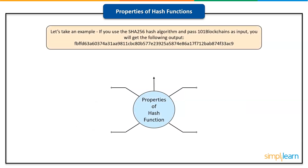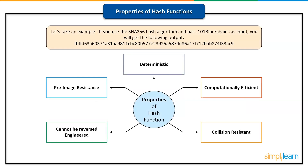Let's take an example. If you use the SHA-256 hash algorithm and pass '101 Blockchains' as input, you will get the following output. This concludes that hash functions have the following key properties: deterministic, pre-image resistant, computationally efficient, cannot be reverse engineered, and collision resistant.